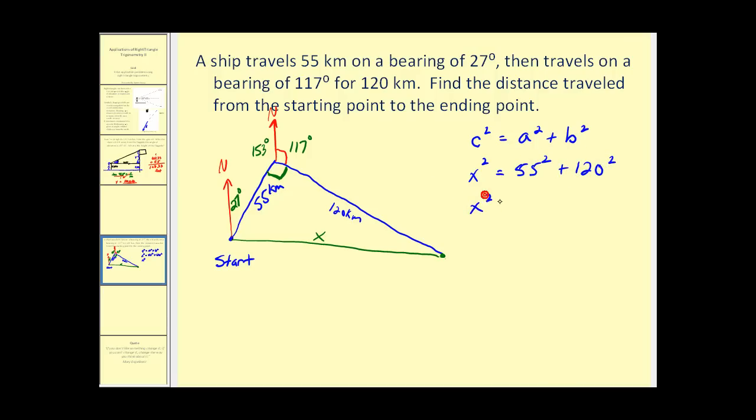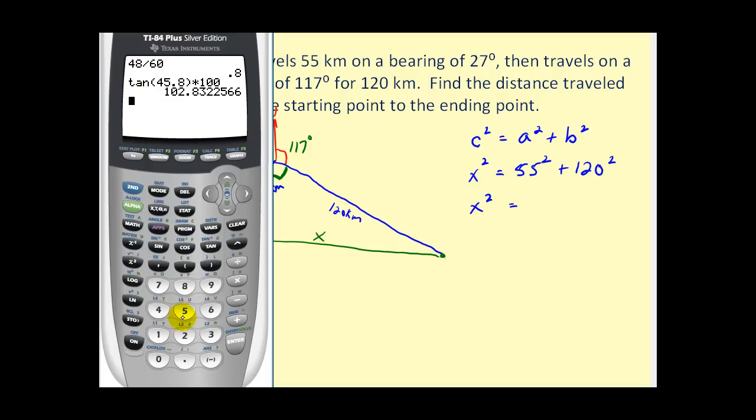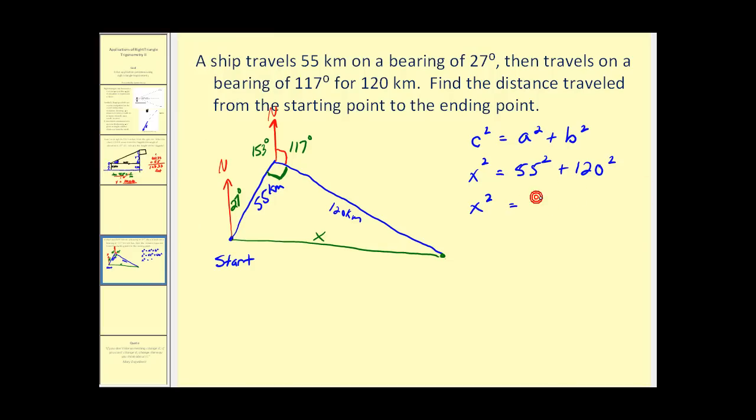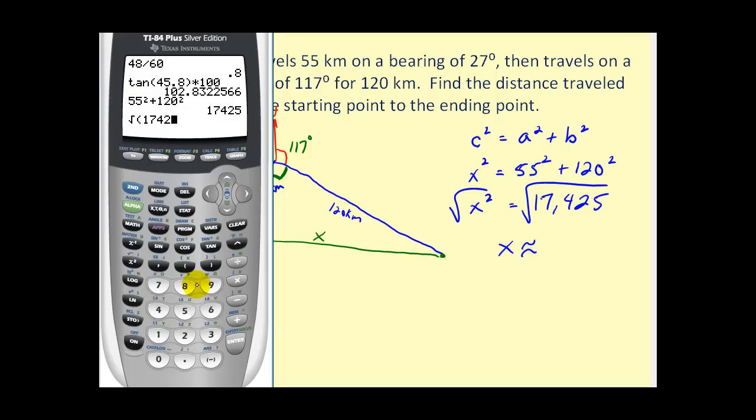x squared will equal, go to our calculator, 55 squared plus 120 squared, 17,425. We'll take the principal square root. And we can see that it's approximately 132 kilometers.